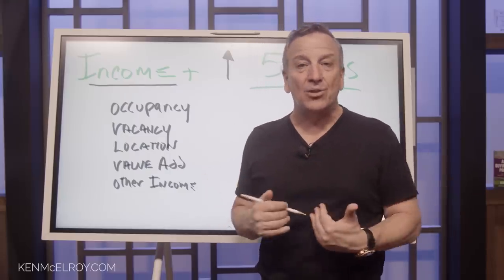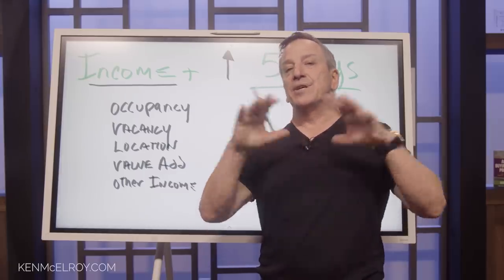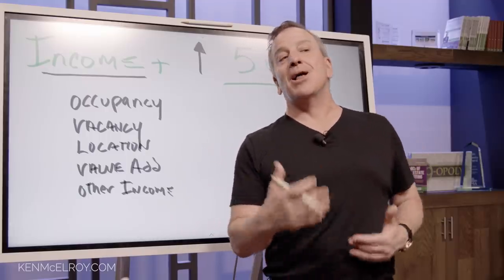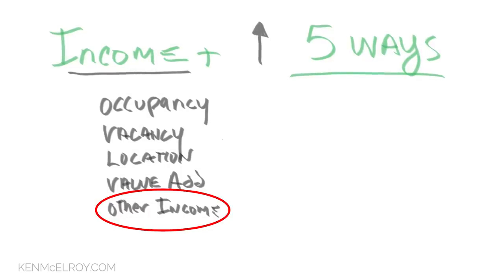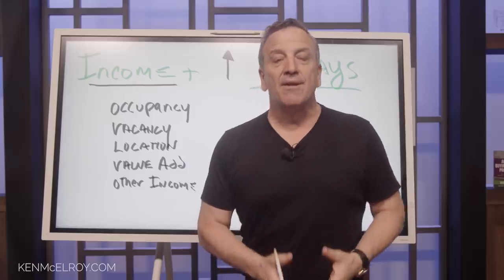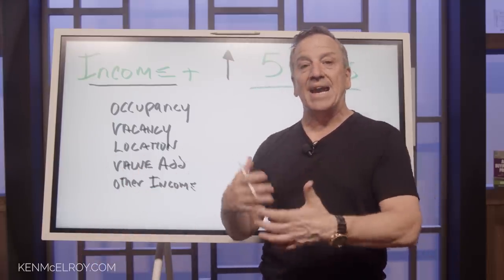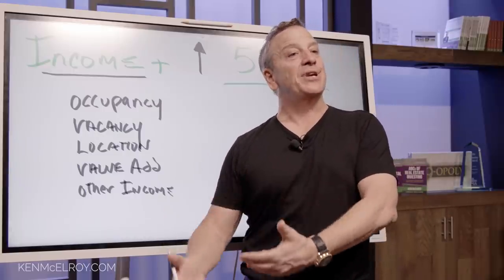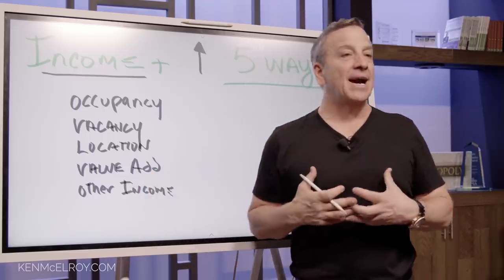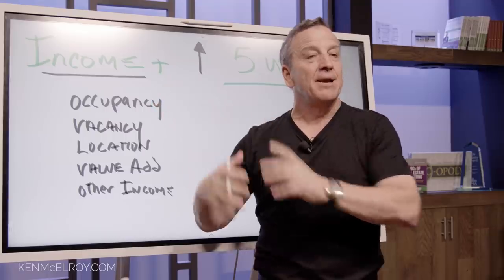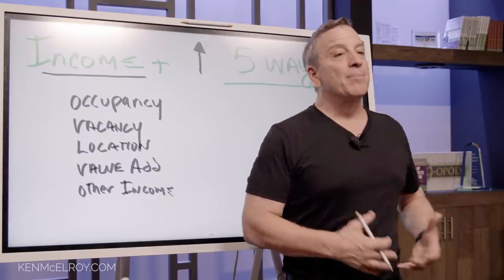These are all things that people can pay for in certain markets — you have to make sure your market will support them. The fifth one is other income, which a lot of people overlook. For pet rent, we typically charge $10 to $50 a month because pets do cause damage in addition to deposits. Another strategy is passing through utility costs — electric, water, sewer, and trash — as an income line item, having residents pay for those just like they would in a house. It offsets the expense but it's income you didn't have before.